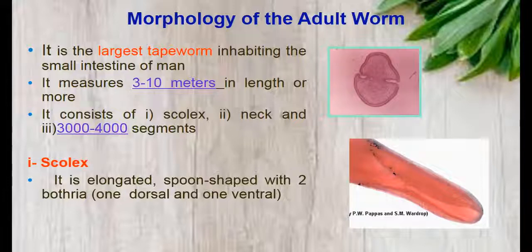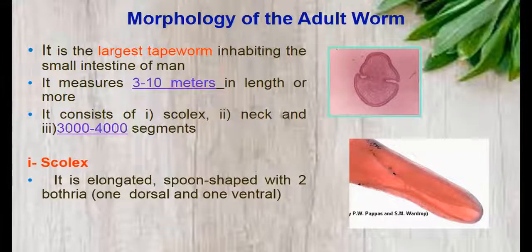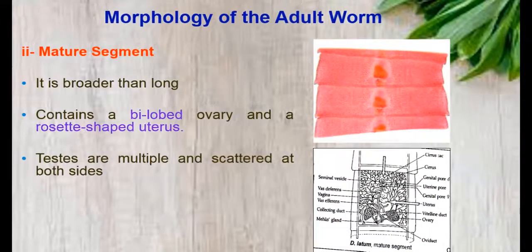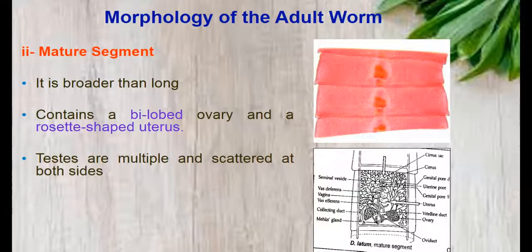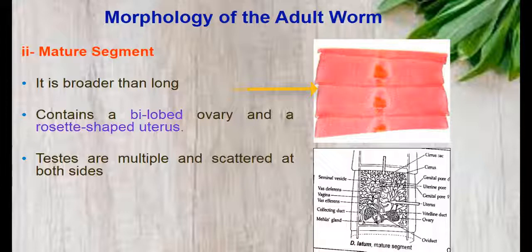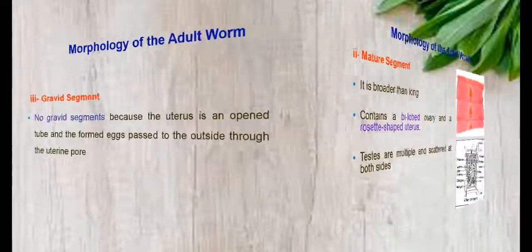This picture shows the scolex of Diphyllobothrium latum with two bothria. Regarding the mature segment of Diphyllobothrium latum, it is broader than long, contains a bi-looped ovary and a rosette-shaped uterus, and its testes are multiple and scattered on both sides.